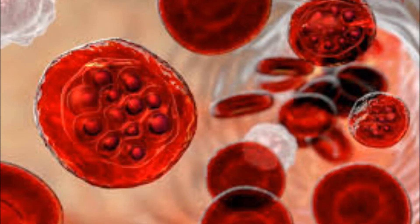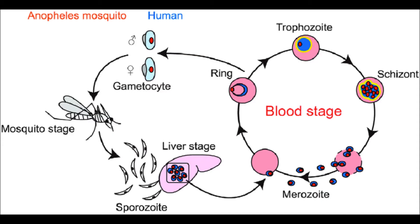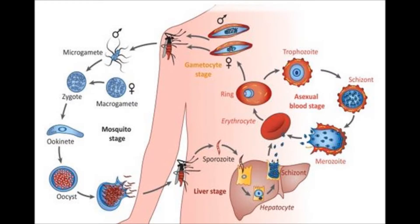The gametocytes reach the mosquito's stomach when the mosquito sucks the blood of an infected human host. The gametocytes produce male and female gametes in the stomach of the mosquito. The male and female gametes fuse to form a zygote.